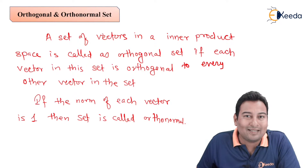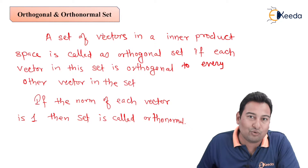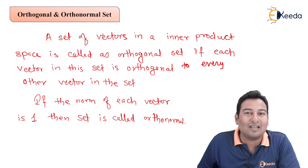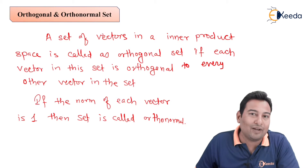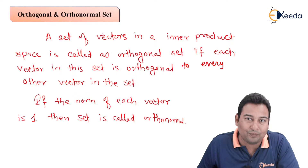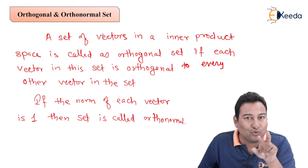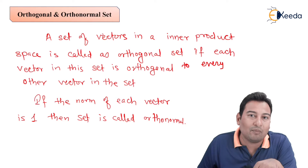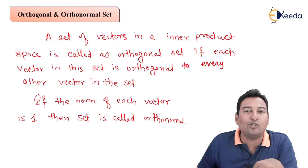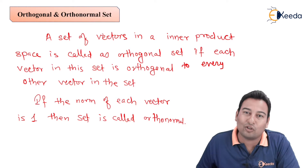Orthogonal we have already discussed. Two vectors are said to be orthogonal if u dot v equals 0. Suppose there are more than two vectors — let us say there are three vectors u, v, and w. Then we are going to check u dot v, u dot w, and v dot w. All should be 0, then the vectors are said to form an orthogonal set.